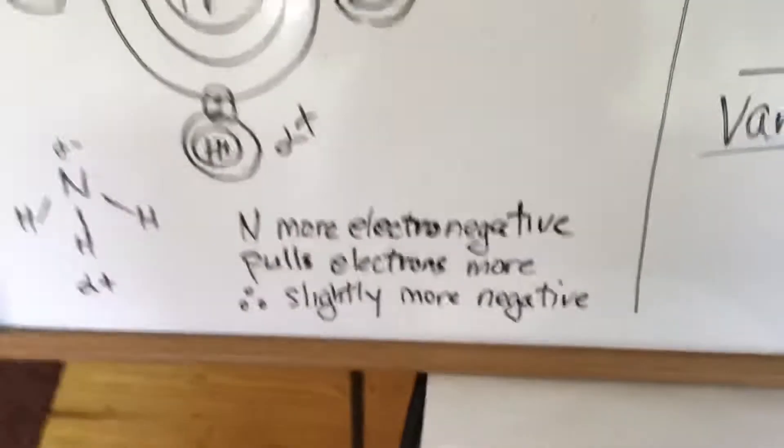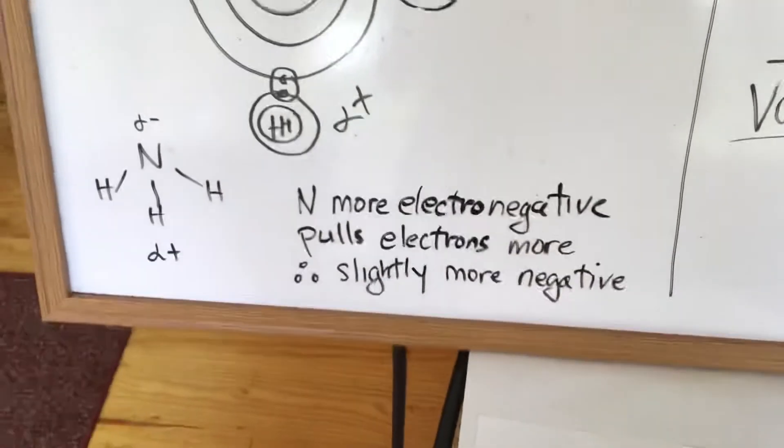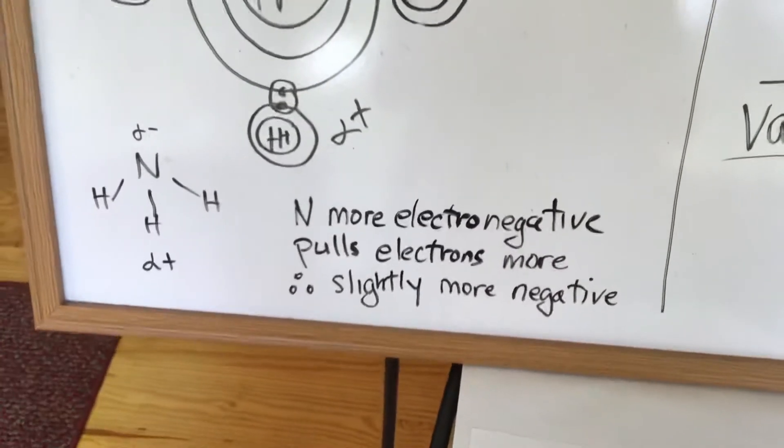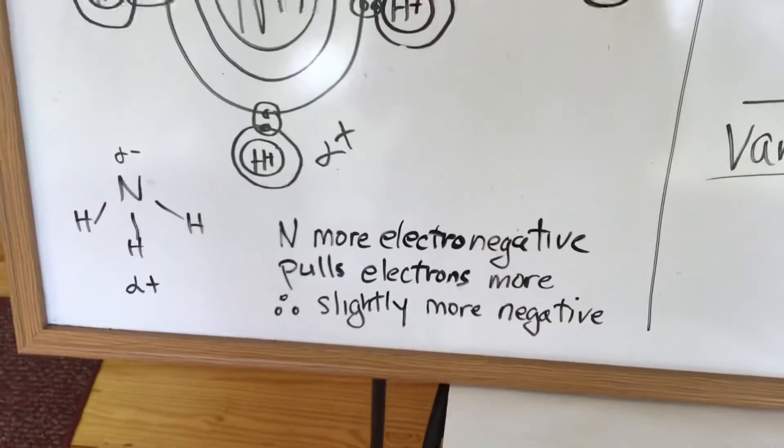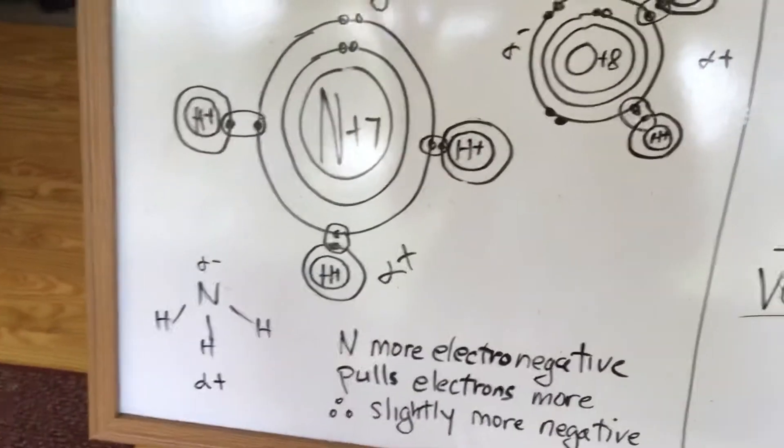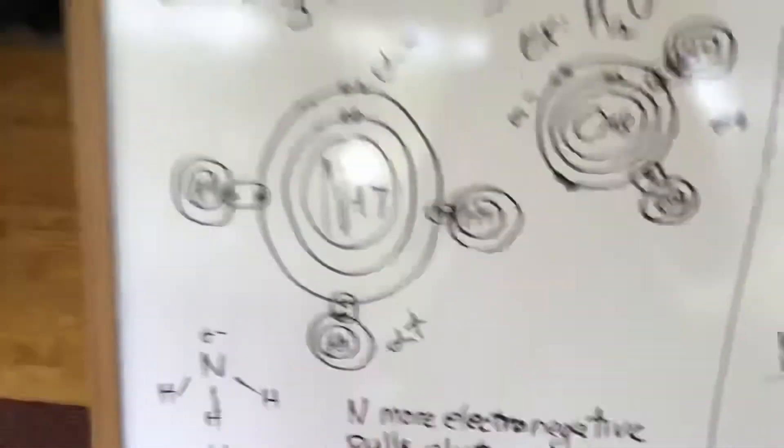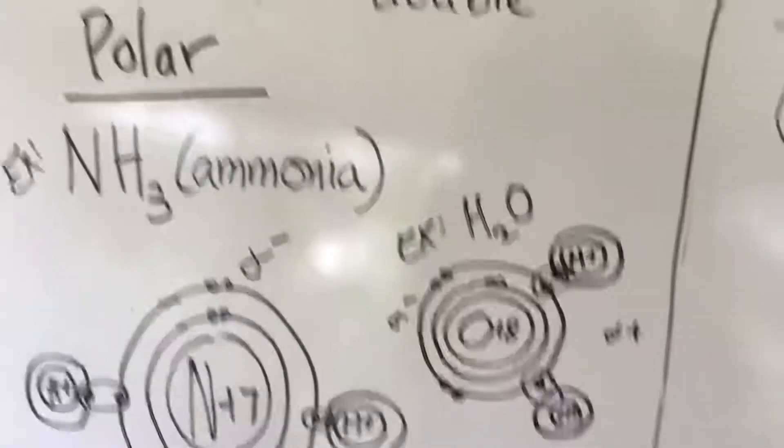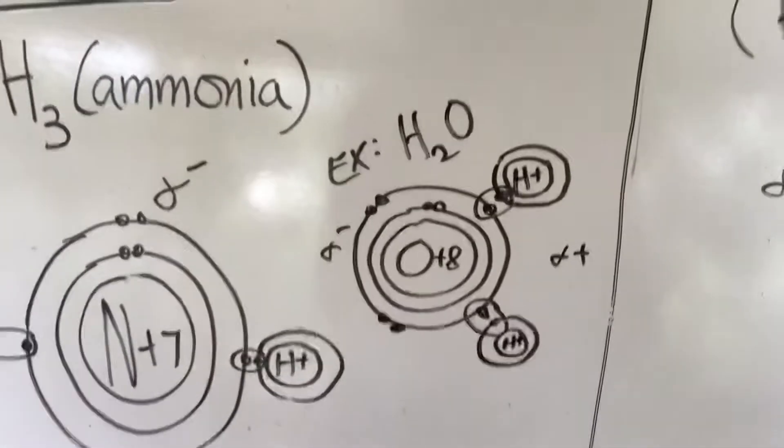This is what we say is nitrogen is more electronegative, which means it pulls the electrons more and therefore it makes it slightly more negative on that side of the molecule. Water is another example of this, of a polar covalent bond, H2O.